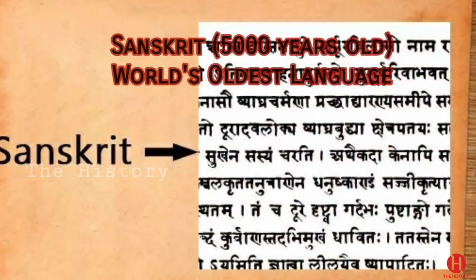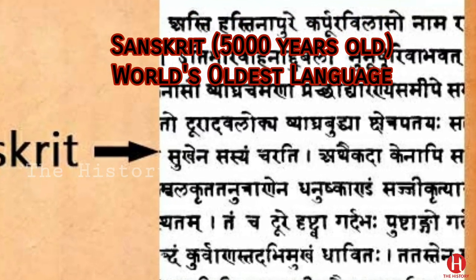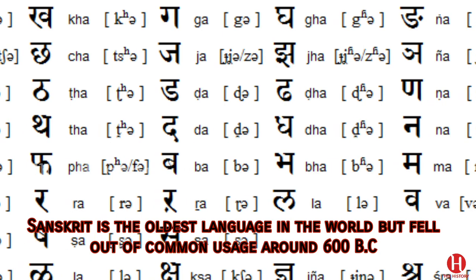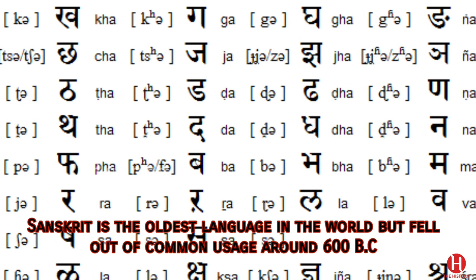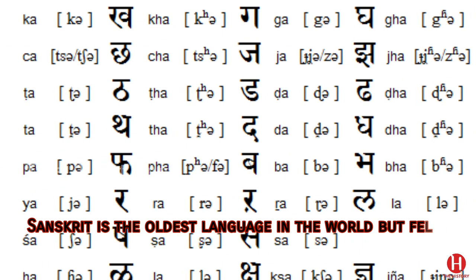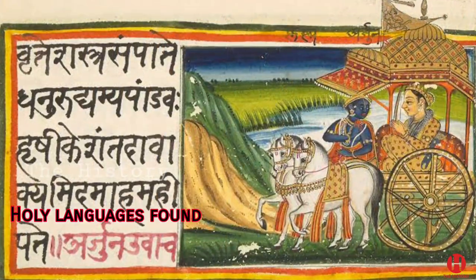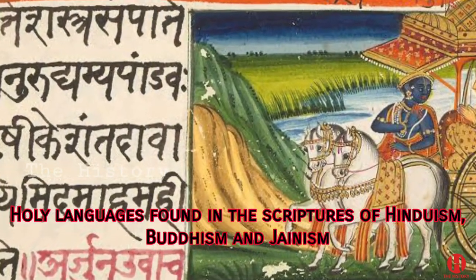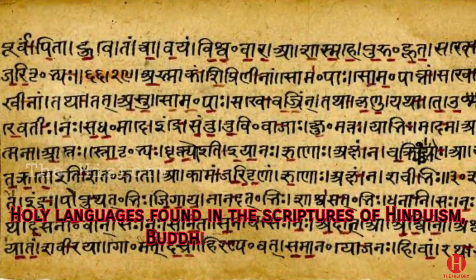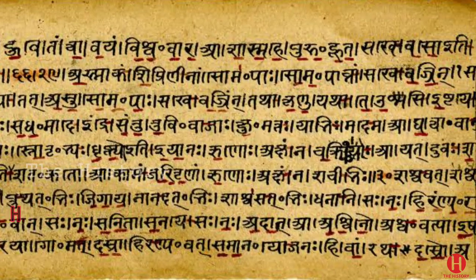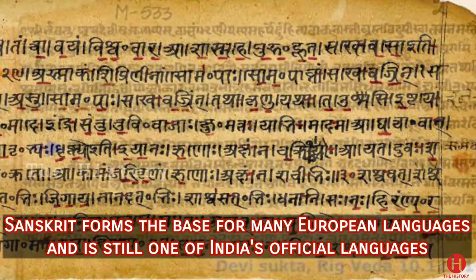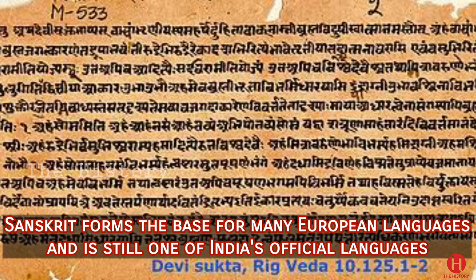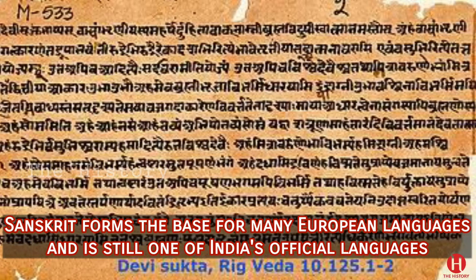Sanskrit, 5,000 years old, is considered the world's oldest language, but fell out of common usage around 600 BC. It is now a liturgical language. The holy language is found in the scriptures of Hinduism, Buddhism, and Jainism. According to studies, Sanskrit forms the base for many European languages and is still one of India's official languages.